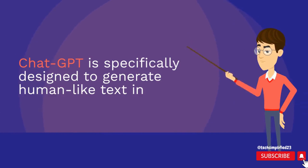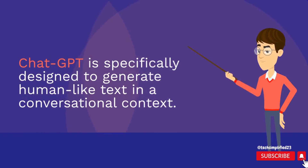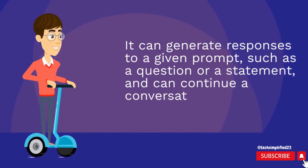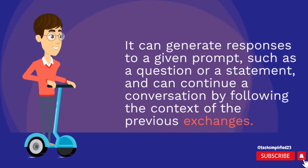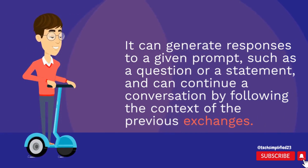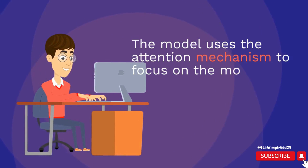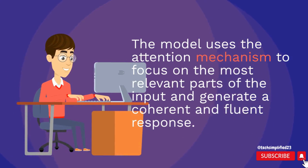ChatGPT is specifically designed to generate human-like text in a conversational context. It can generate responses to a given prompt, such as a question or a statement, and can continue a conversation by following the context of the previous exchanges. The model uses the attention mechanism to focus on the most relevant parts of the input and generate a coherent and fluent response.